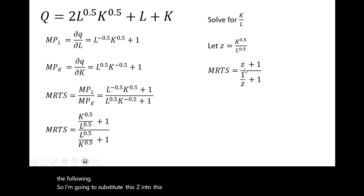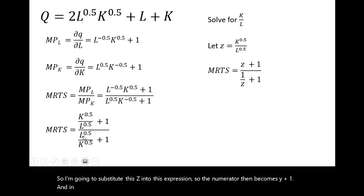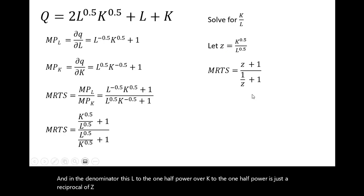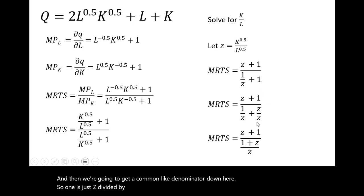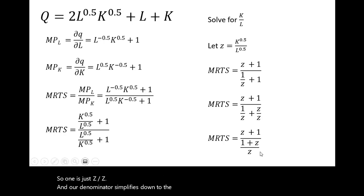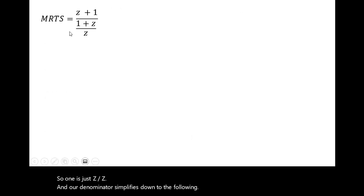So I'm going to substitute this z into this expression. So the numerator then becomes z plus 1. And in the denominator, this l to the 1 half power over k to the 1 half power is just a reciprocal of z, so 1 over z. And then we're going to get a common-like denominator down here. So 1 is just z divided by z. And now our denominator simplifies down to the following.